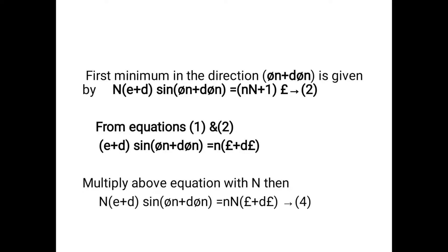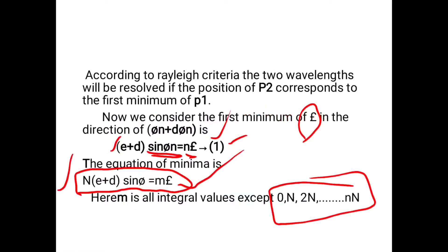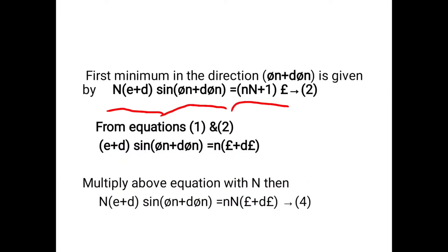The first minimum equation in the direction of theta_n plus d_theta_n is given by: N * (e + d) sin(theta_n + d_theta_n) = n * (N + 1) * lambda ... equation 2. Combining equations 1 and 2 gives the practical working equation.